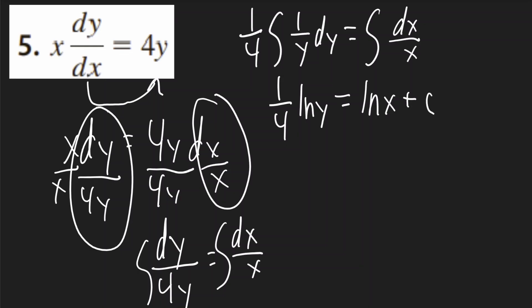Now I can multiply both sides by 4. On the left, it'll be ln y, and on the right, it'll be 4 ln x plus c. And you don't need to multiply the 4 to the c, because the c already encompasses all the constants.